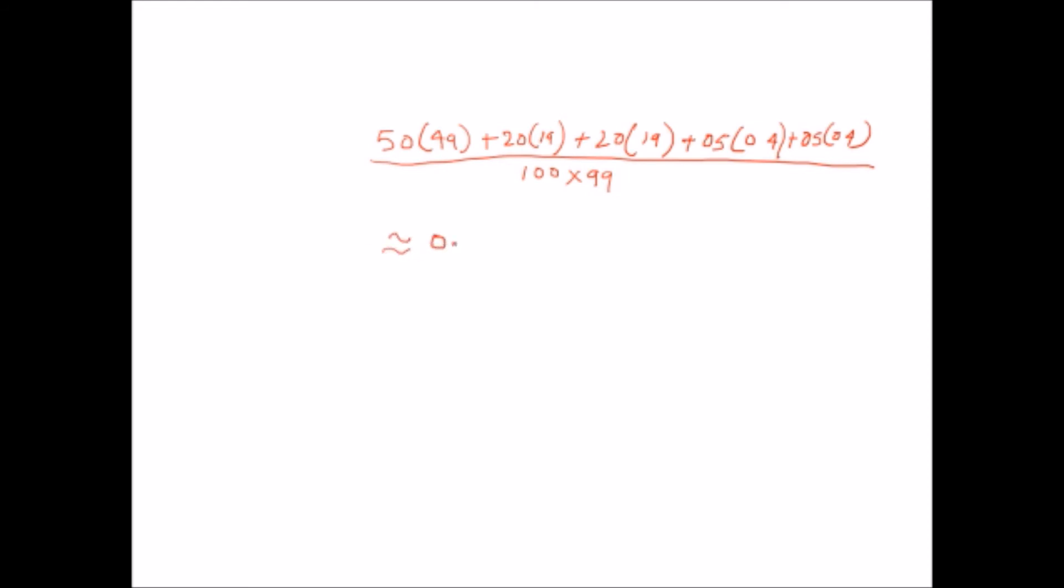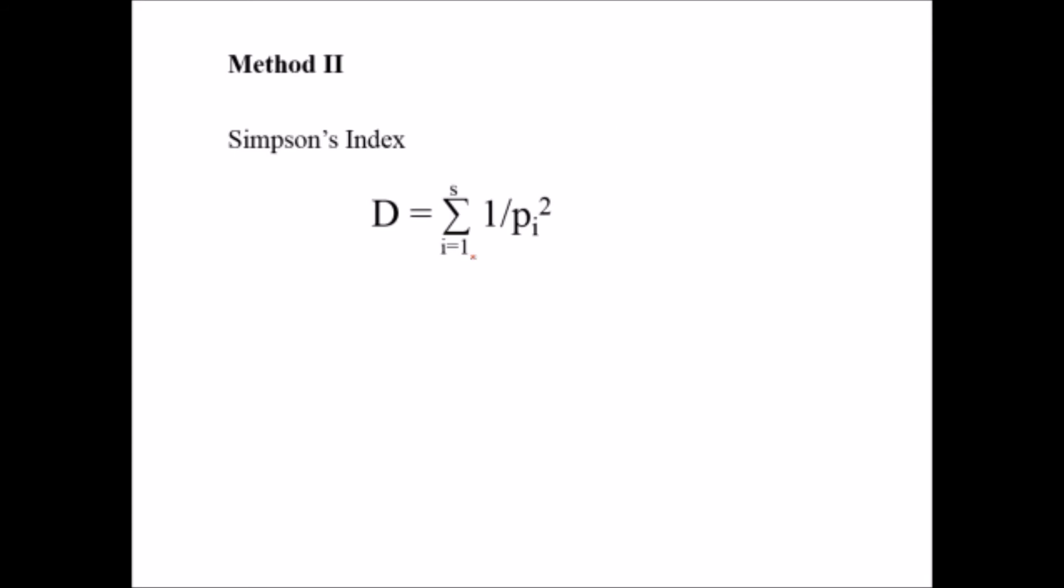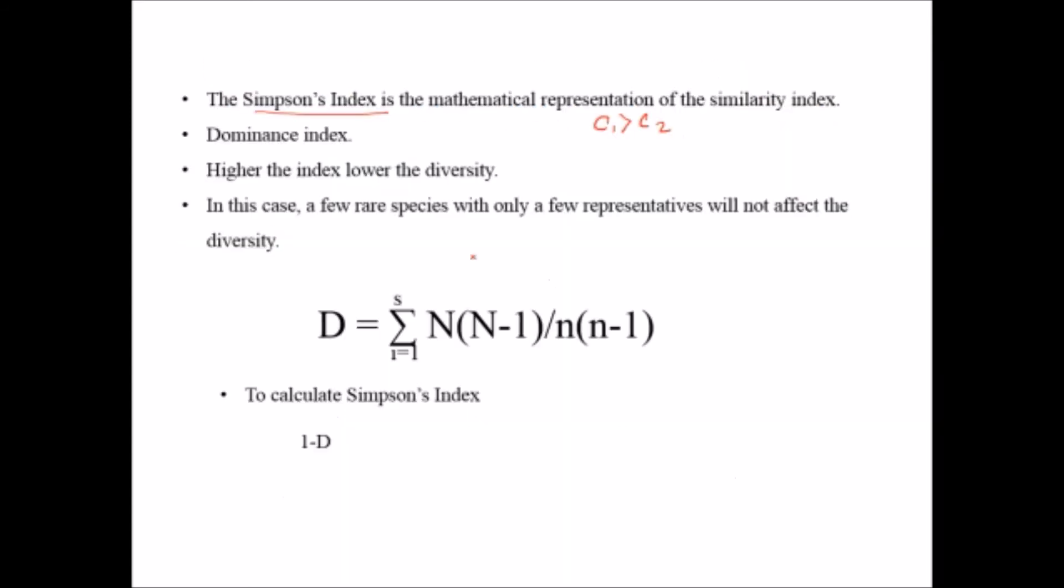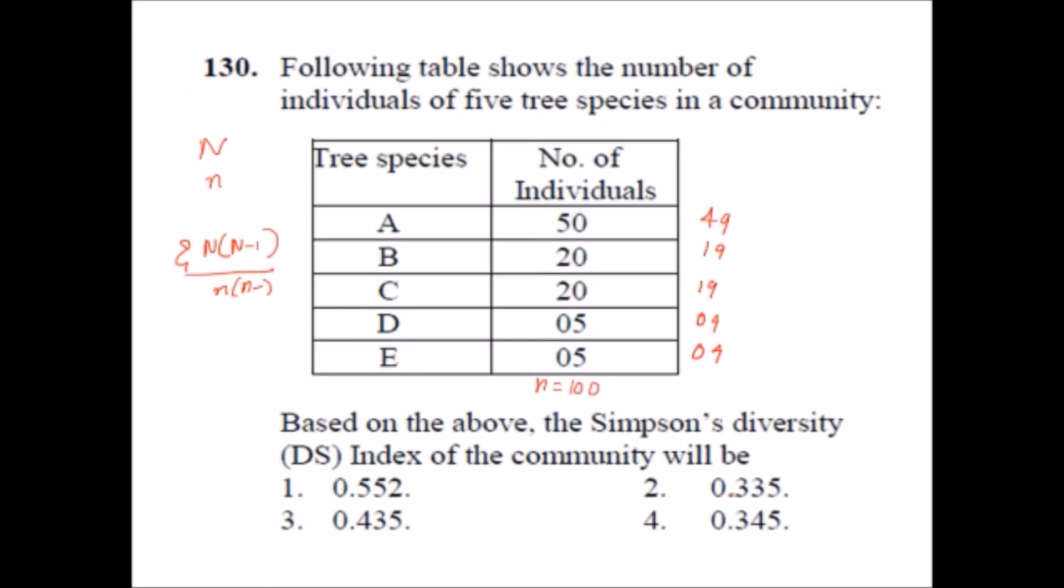Now when you will calculate this you will get the approximate value of 0.33. So it is not matching with any of the options, but if you will look at the options it is 0.335, it will be option number two.